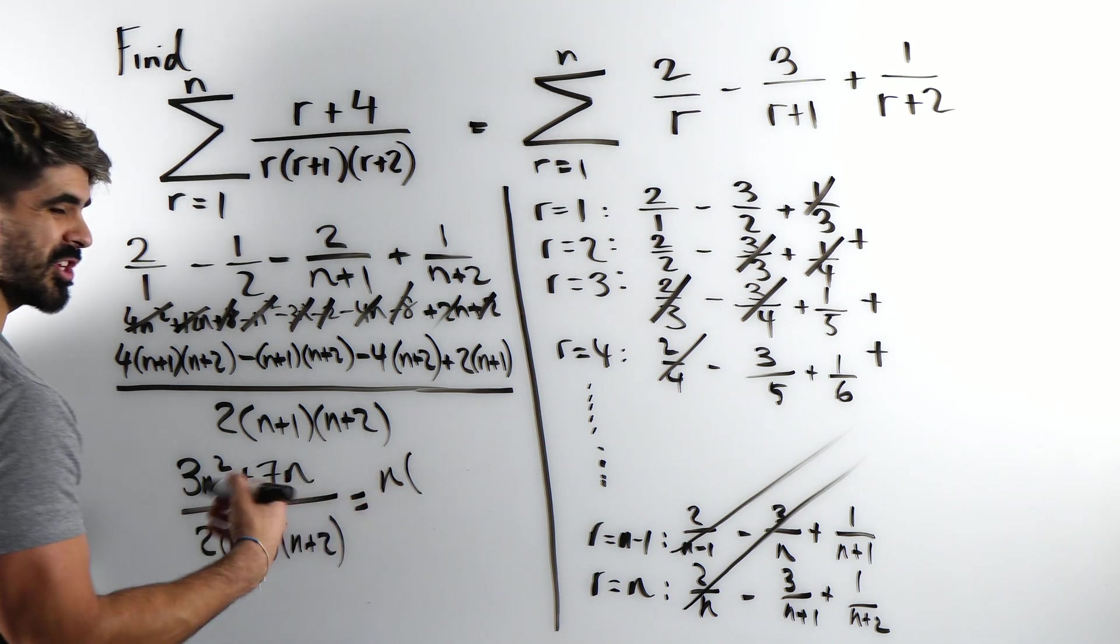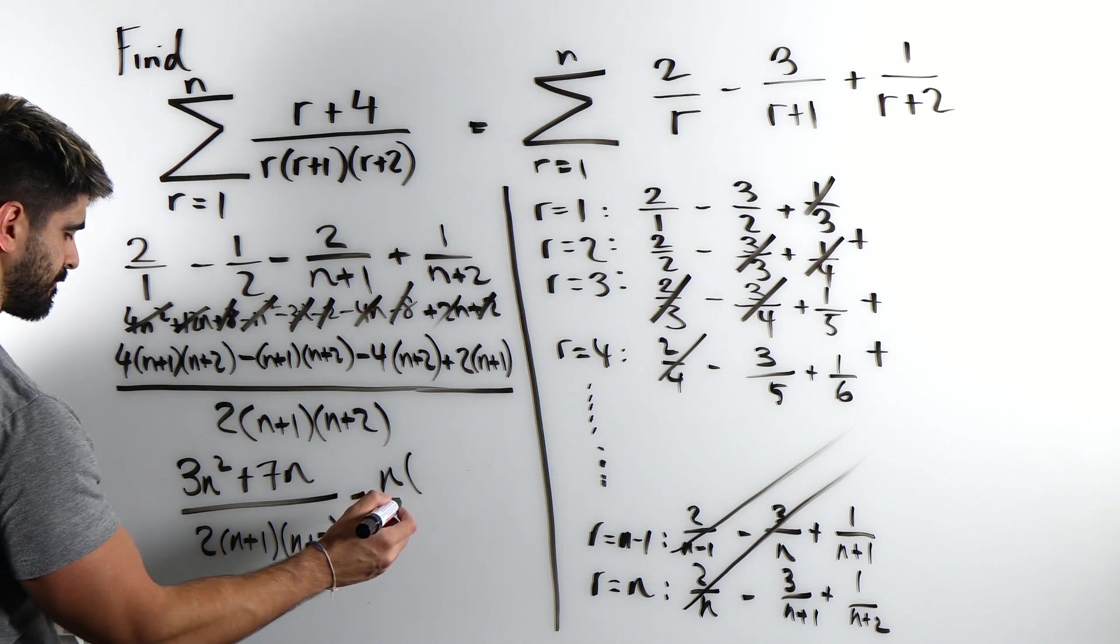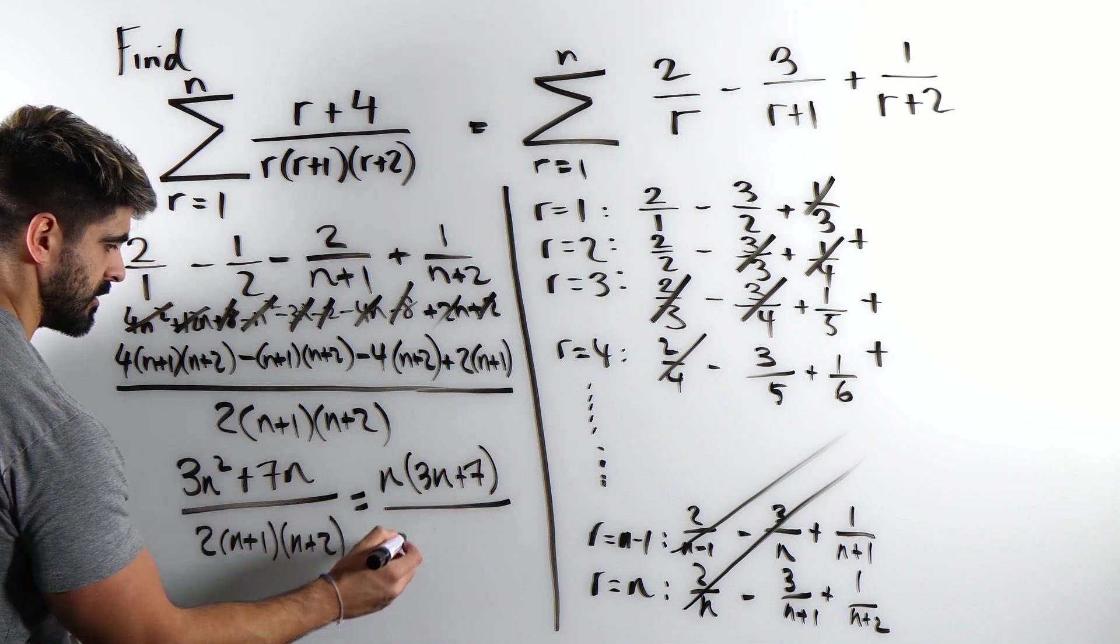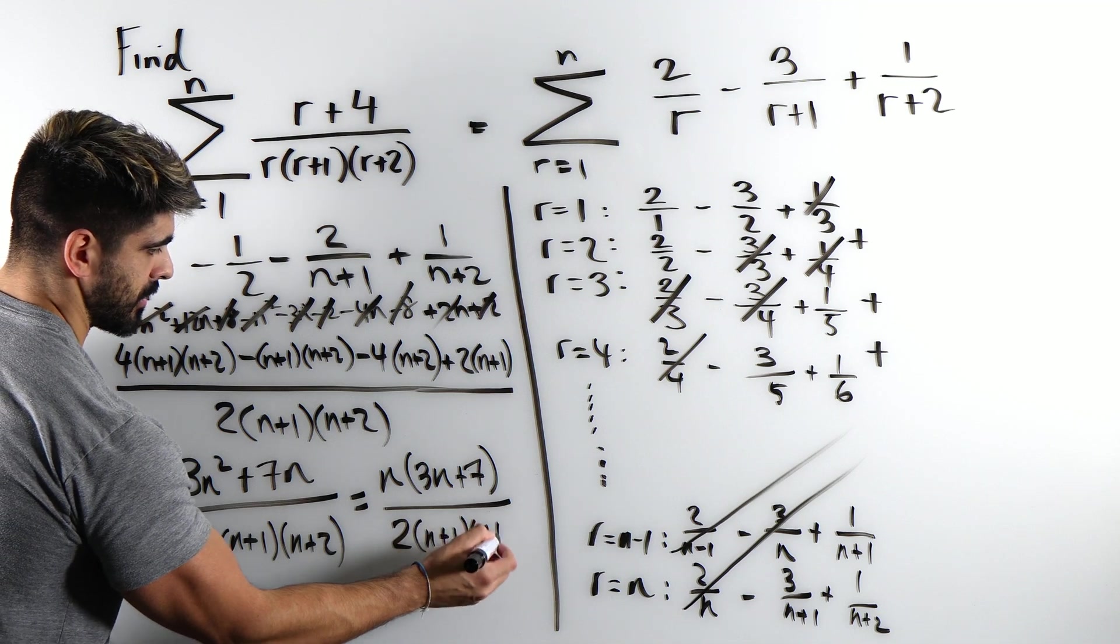So this gives us n. Usually they give you the form. And it's as factorized as it can be. So 3n plus 7 over 2 n plus 1 n plus 2. And this would be a huge question in your exam.